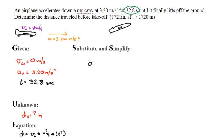I don't know what distance is for displacement, but I do know velocity is 0, and time is 32.8 seconds plus – I'm going to put this over 2. The acceleration is 3.20 and the time is 32.8, but I need to square it.